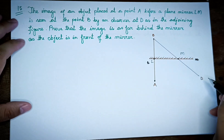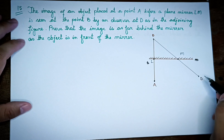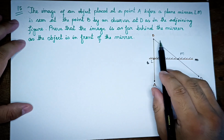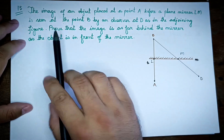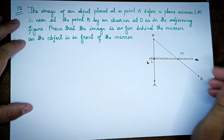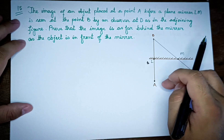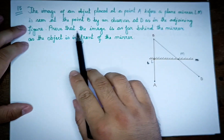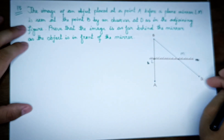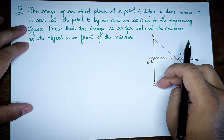The observer is placed at a point A before the plane mirror LM. The image is seen at point B by an observer at D. The observer is placed at point B, so the object is placed at the image.